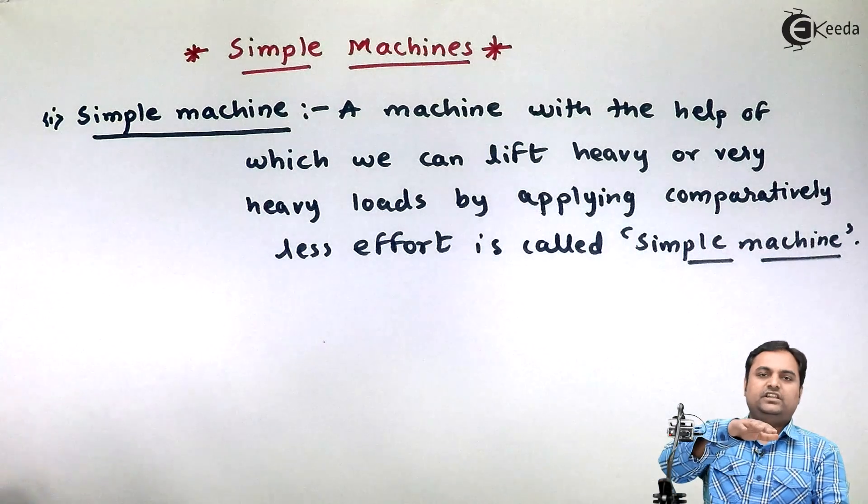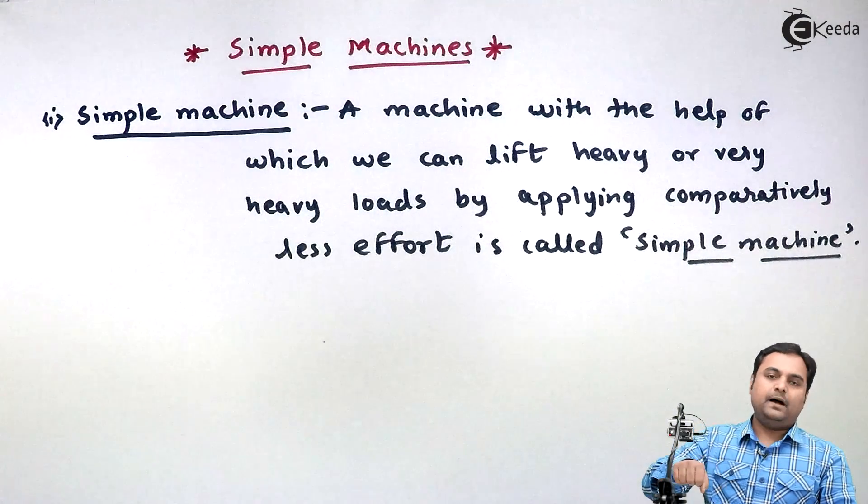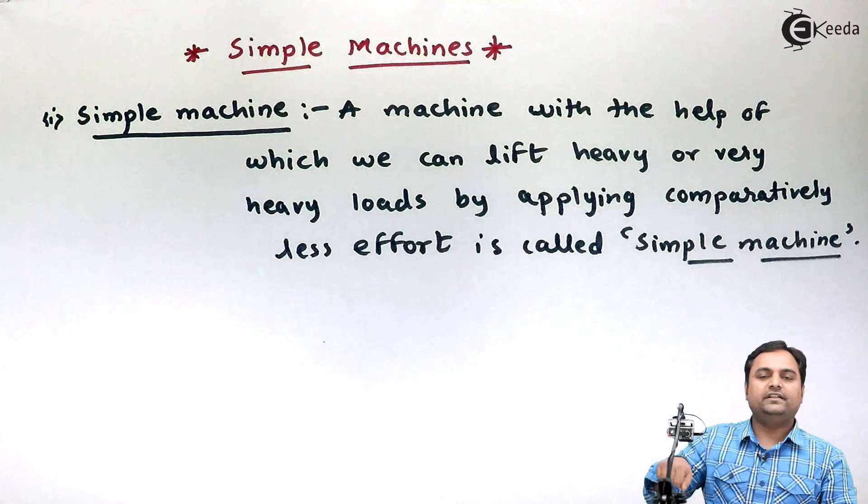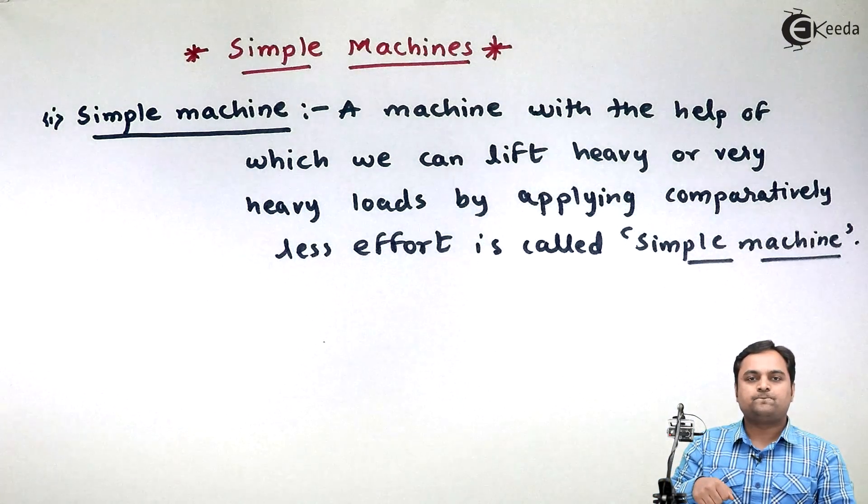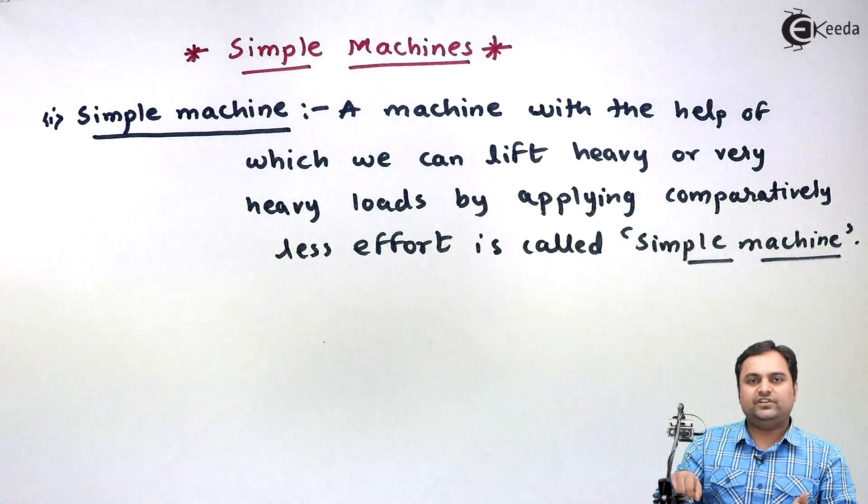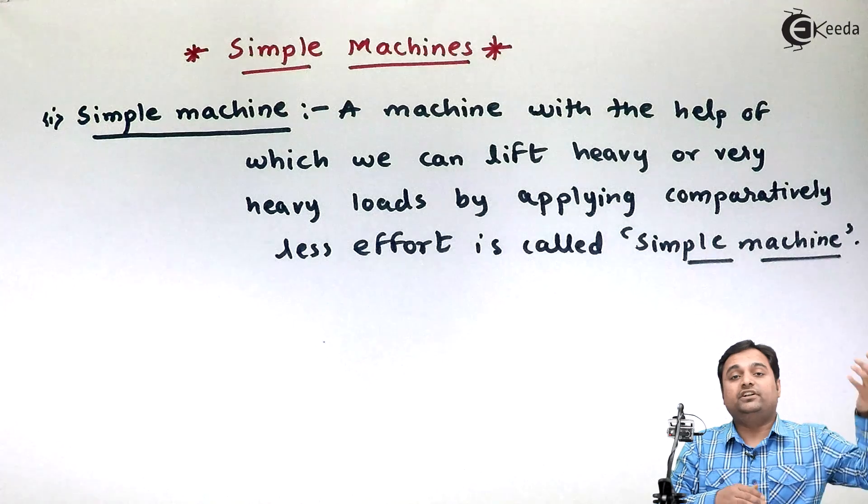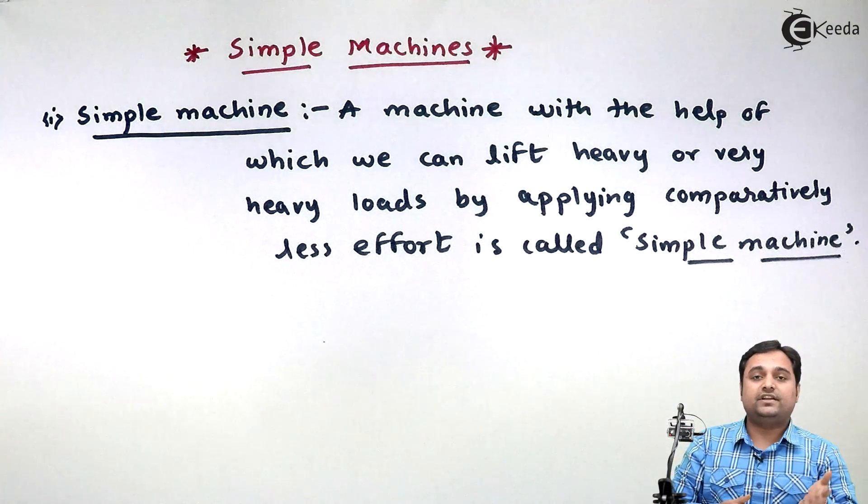If we see a screw jack, it is a very small machine and we apply the effort over that, means we would be rotating the handle of the screw jack. So the effort which we are applying at the handle of the screw jack is less as compared to the weight of the car.